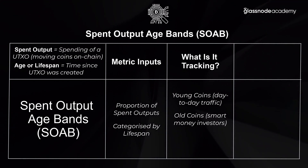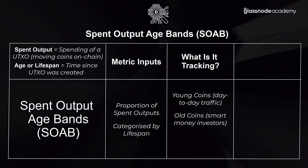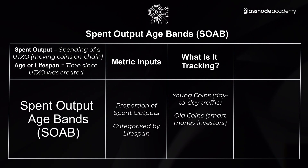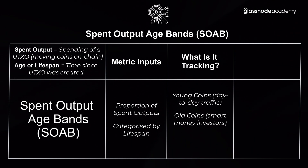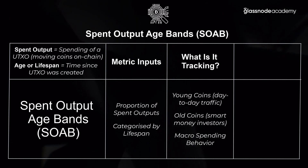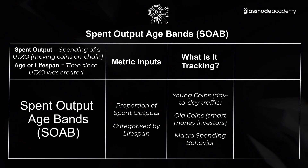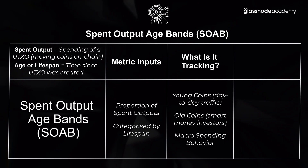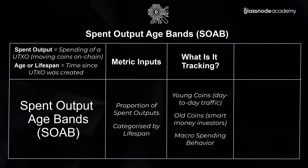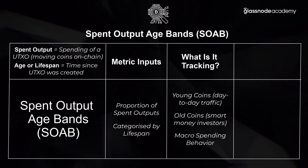What we're really looking for is the difference between younger coins and older coins — or looking at a particular age bracket, such as people who've accumulated in recent months — and what that tells us about overall market sentiment. The spent output age bands show the proportion of spending on any particular day, classified by different age brackets, so we can see exactly how many coins on the move were five to seven years old, ten years old, or less than a day or an hour old.